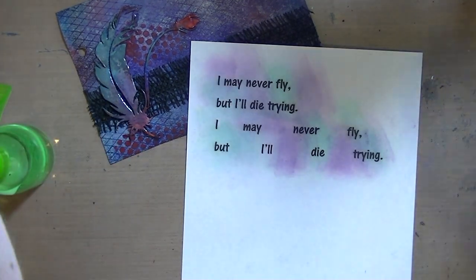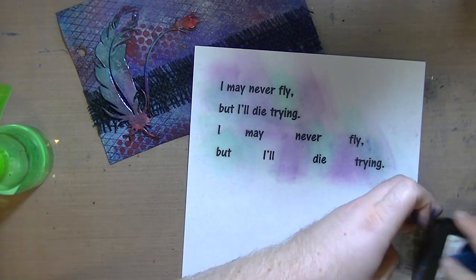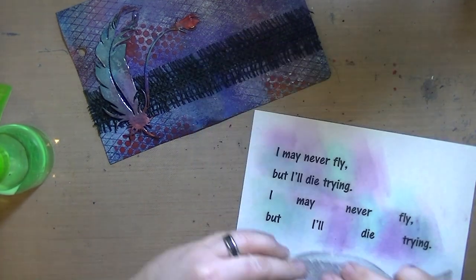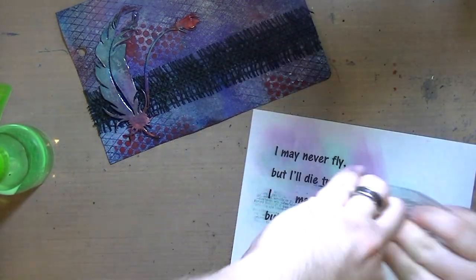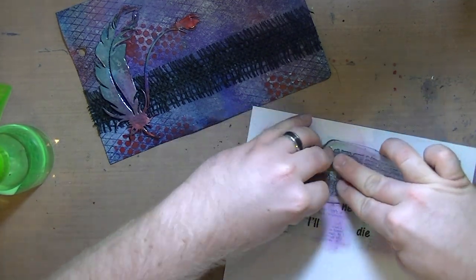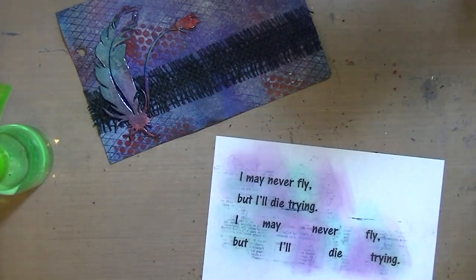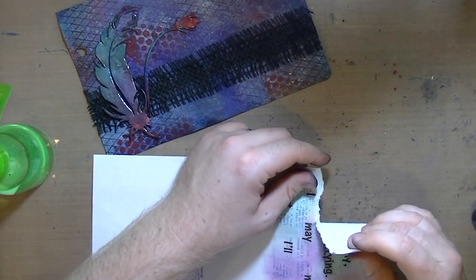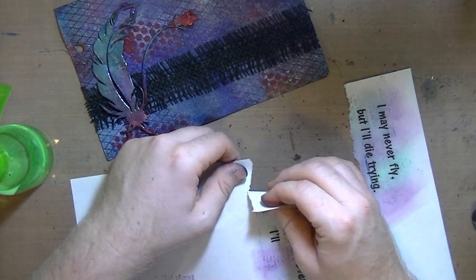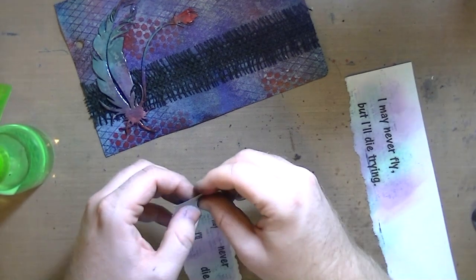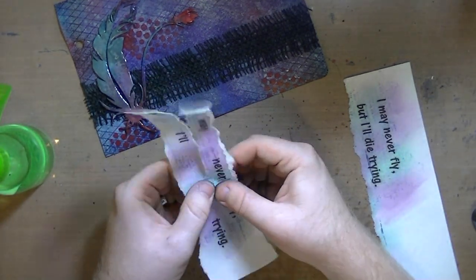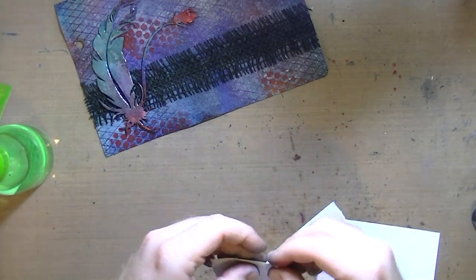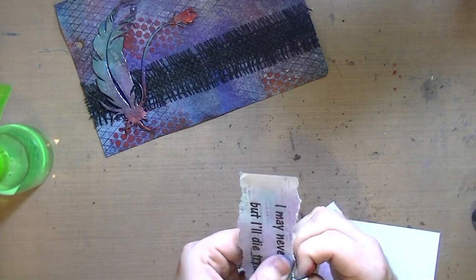I'm using I think chipped sapphire distress ink and that Teresa Collins dictionary stamp by Fiskars just to create some texture on this so it's not so plain. When I did that, the edge of the stamp underscored 'trying' for me so I was like oh that's actually kind of cool. I'm going to end up using the top one, not this one that I'm tearing now. I spaced it all out because I wasn't sure if I was going to use the words individually or the phrase together, then I decided to just use the phrase together.